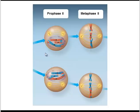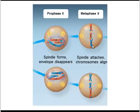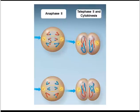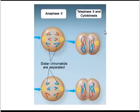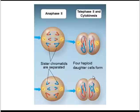Meiosis II is going to look pretty similar. During prophase II, the spindle forms and the nuclear envelope disappears. During metaphase II, our chromosomes — which still consist of their sisters — are going to align in the middle of the cell, and the spindle attaches to them. Then during anaphase II, the spindle is going to pull apart the sisters — one set goes to one pole, the other set goes to the other pole. Finally, during telophase II and cytokinesis, the spindle disappears, the nuclear envelope reforms, and the cell splits. This is where we get our four haploid daughter cells, and note that each is a little bit unique because of that crossing over process.